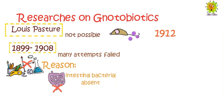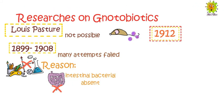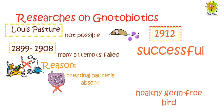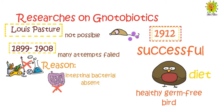In 1912, scientists succeeded in growing a healthy germ-free bird when they were provided an adequate diet. That was the first time a notobiotic animal was created. The growth of notobiotic organisms was a great advancement in research, providing a good experimental system to study the interaction between animals and specific microorganisms.